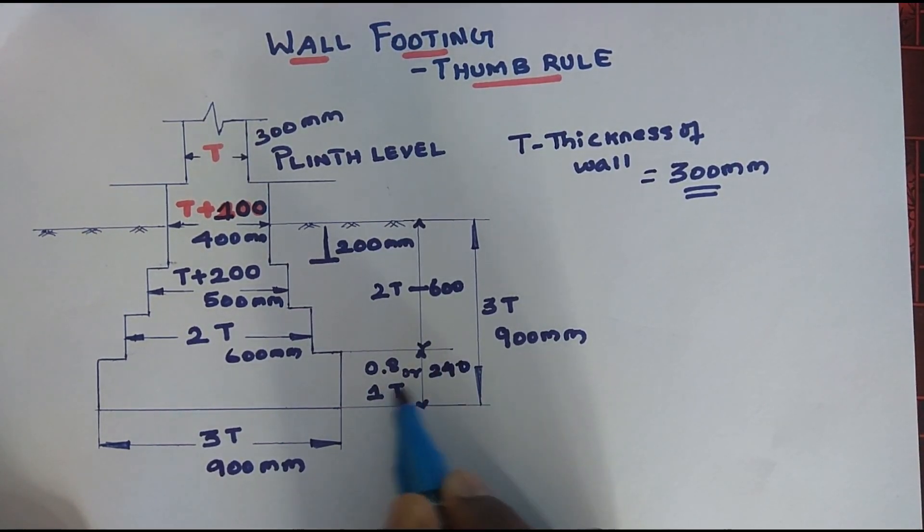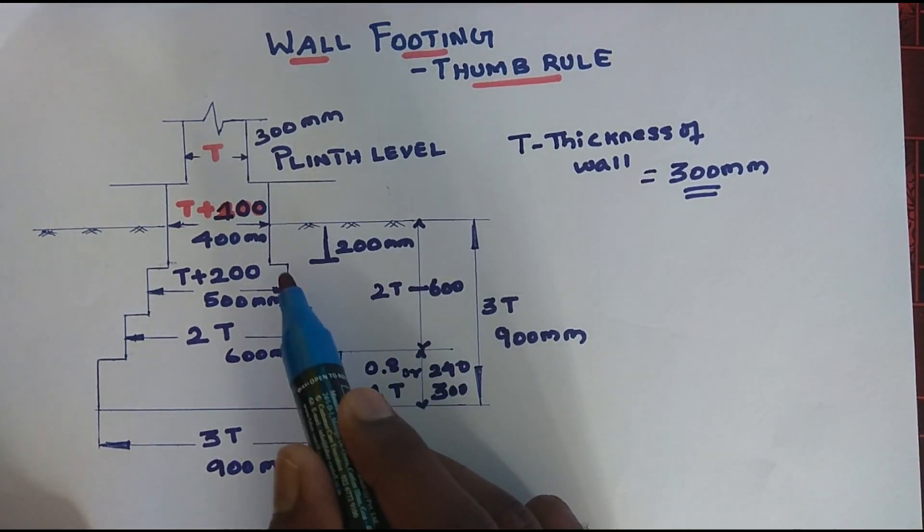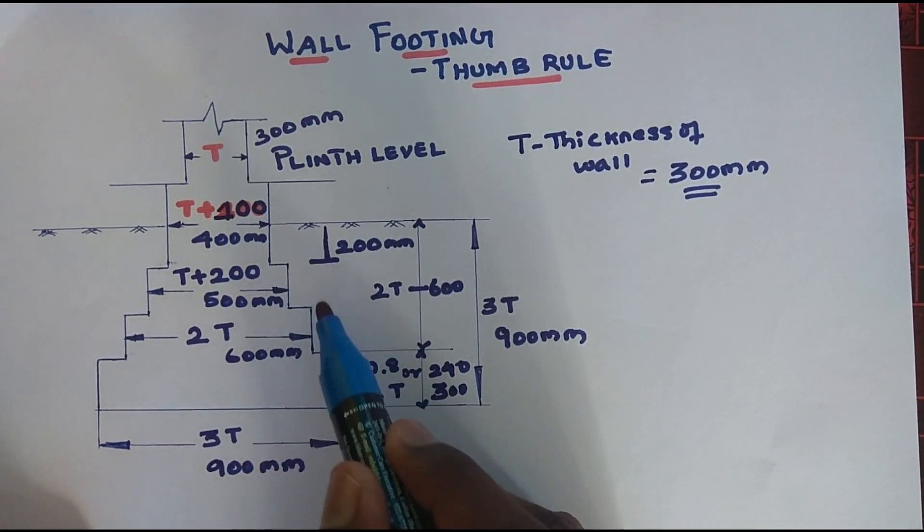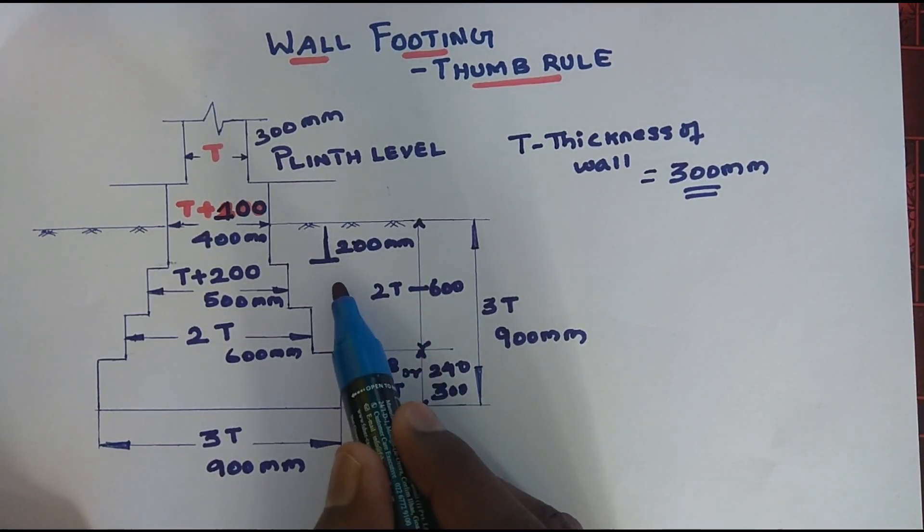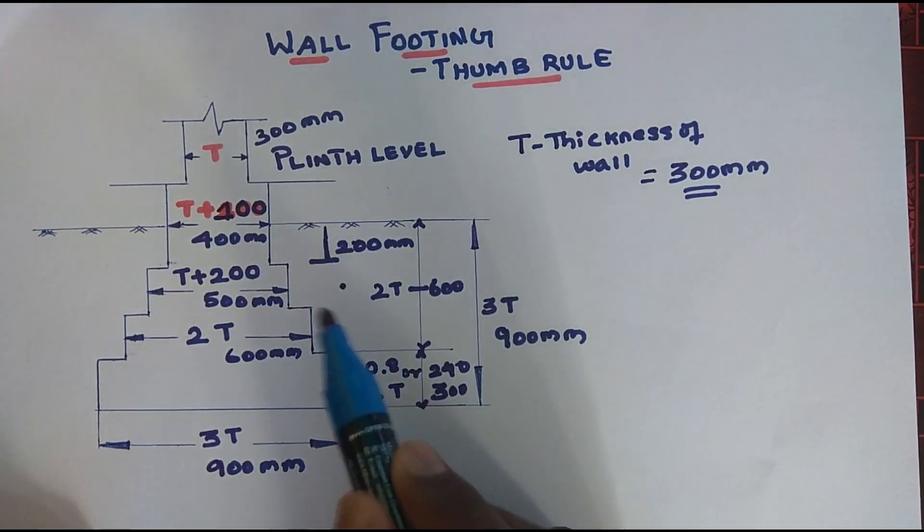1T is 0.18, so 240mm. Here is 1, so here is 300mm. Here is 600. Equal or split. So 600 and here is 200. Again here is 200 and here is 200. That is the depth.